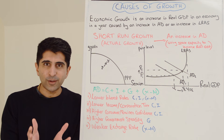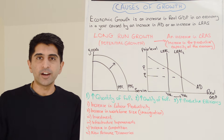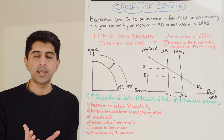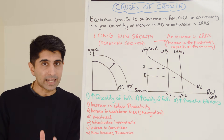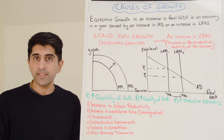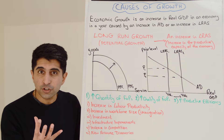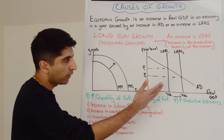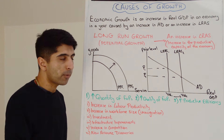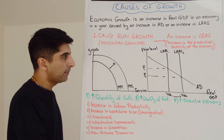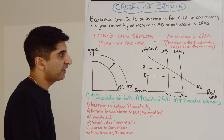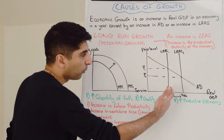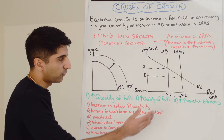Now let's look at long-run growth, also known as potential growth, which occurs whenever there is an increase in LRAS. When that happens, there is an increase in the productive capacity of the economy, so it has the potential to grow at a faster rate. It doesn't necessarily mean the economy is actually growing faster — that's dependent on AD. On the AD-AS diagram, using the classical interpretation, a shift of LRAS to the right increases the full employment level of output from YFE1 to YFE2. That is your long-run, potential growth.